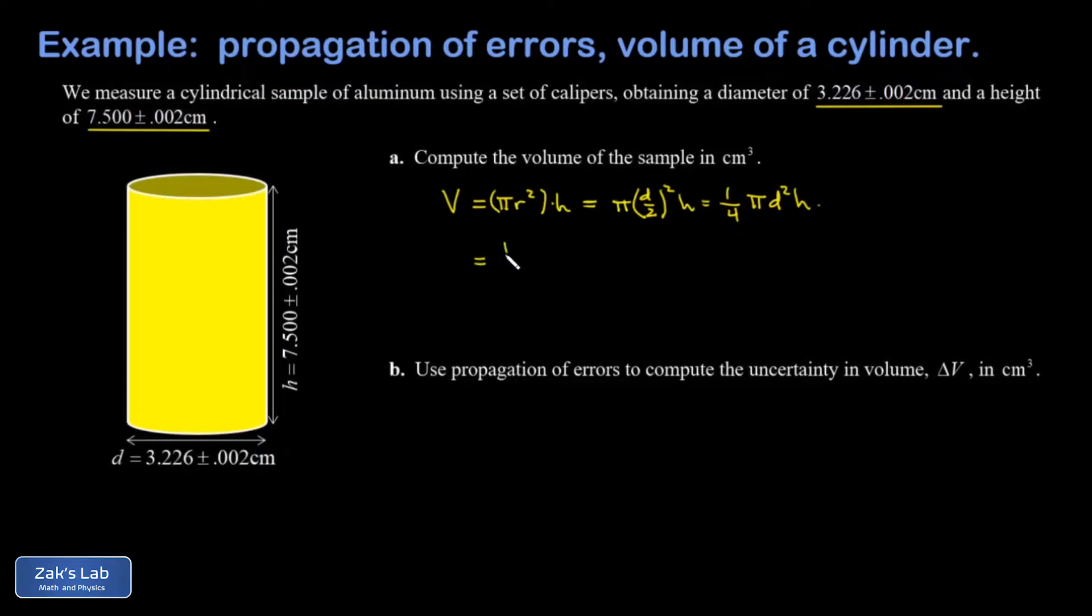We just have to plug the numbers in now. It's one quarter pi, the diameter is 3.226, the height 7.500, and I'm going to keep a lot of extra precision until we get to part B. Our volume comes out to 61.303 cubic centimeters.